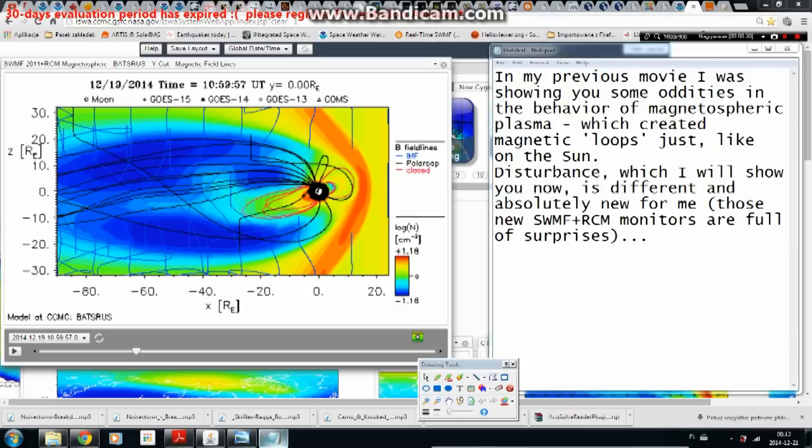In my previous movie I was showing you some oddities in the behavior of magnetospheric plasma which created magnetic loops just like on the sun. Disturbance which I will show you now is different and absolutely new for me. Those new SWMF plus RCM monitors are full of surprises.